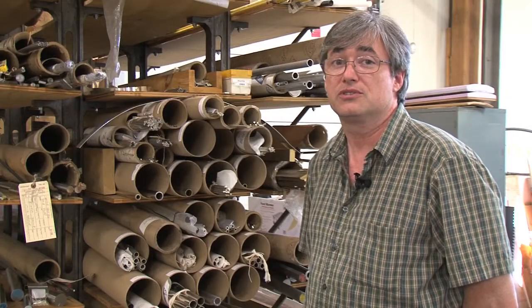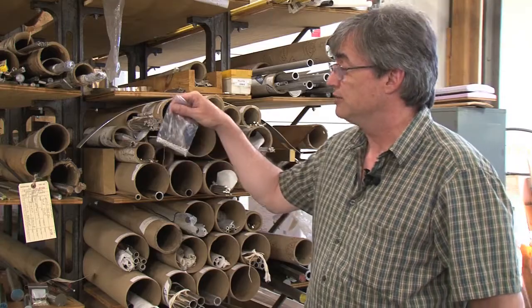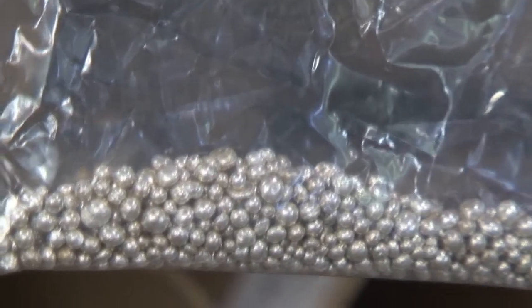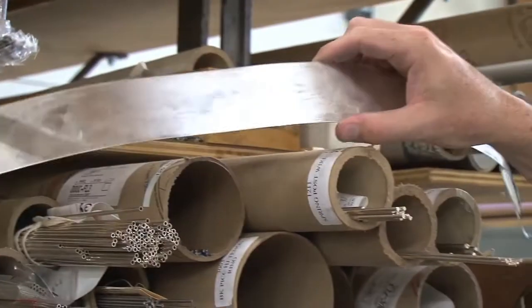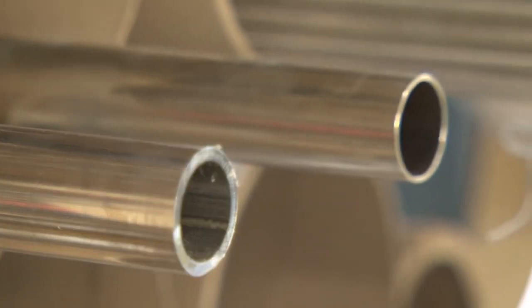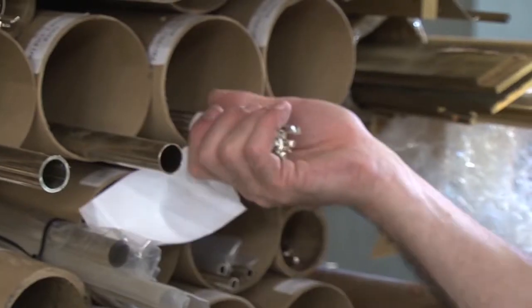All of our material starts out as grain or bullion. The metal is melted and then rolled into flat stock, extruded into tubing, or drawn into solid rod.